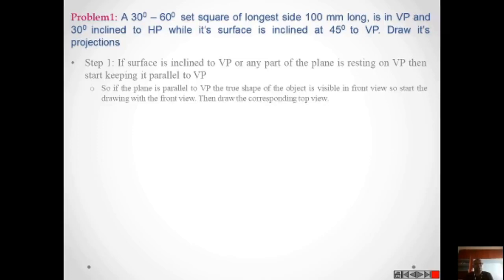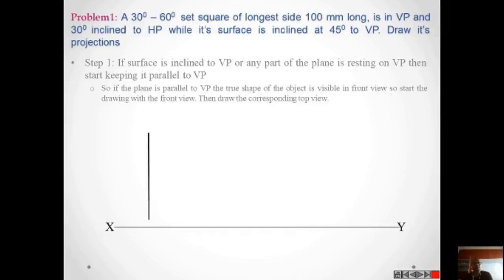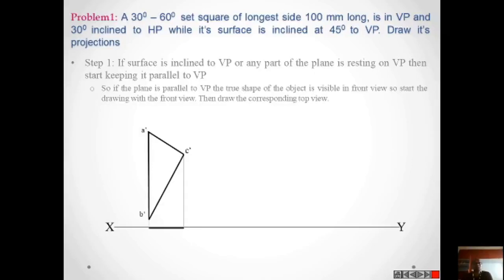If the plane is parallel to VP, the true shape will be seen in the front view. So the first step is to draw the front view, then draw the top view. This is a 30-60-90 triangle: here it is 30 degrees, here it is 60 degrees, and the length of the longest side is 100 mm. Draw the projections and you will get the top view A, B, C.